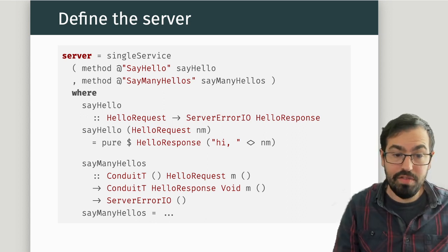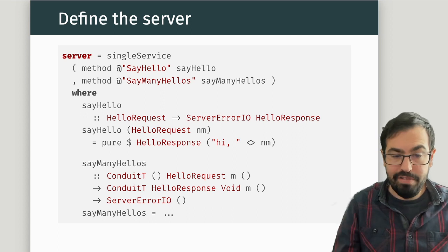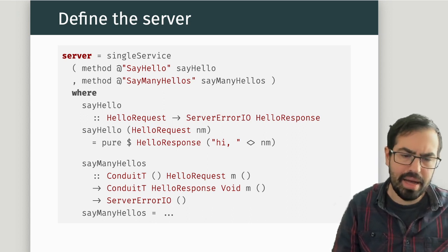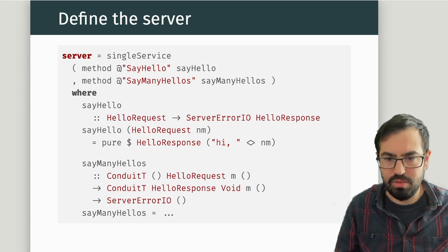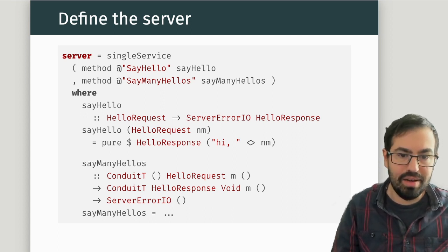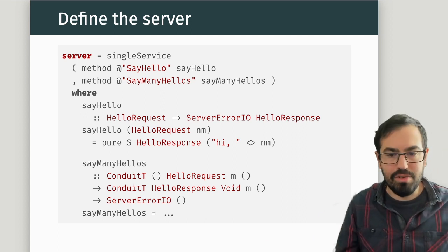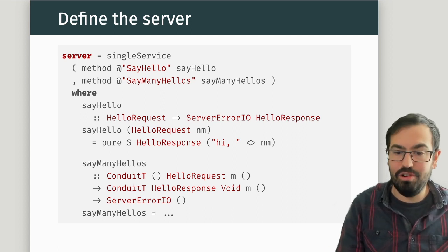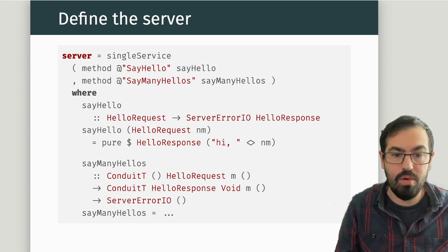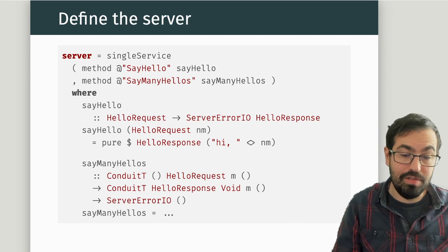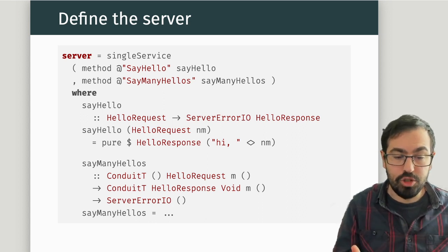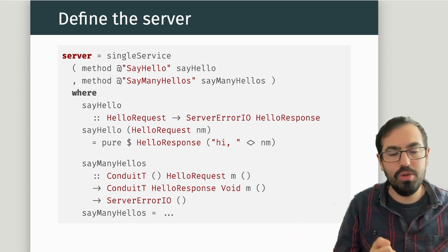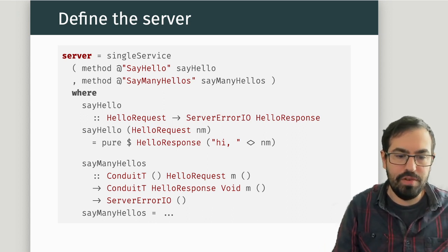The way you define the server is quite similar — you define one function for each method in your service. For SayHello, inputs become arguments and outputs become outputs, and there's a ServerError IO monad to wrap everything, defined exactly as the Handler monad in Servant: ExceptT of ServerError of IO. If you want to use streaming, you use a conduit — one as input and one as a sink — connected into your definition of SayManyHellos.